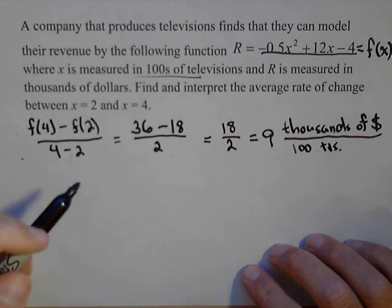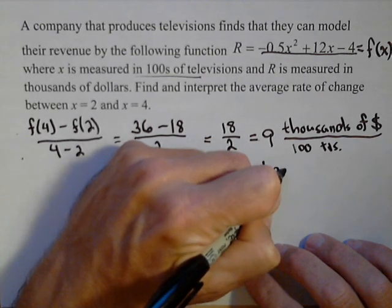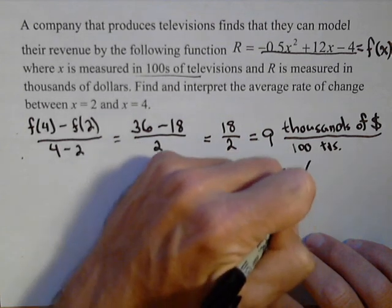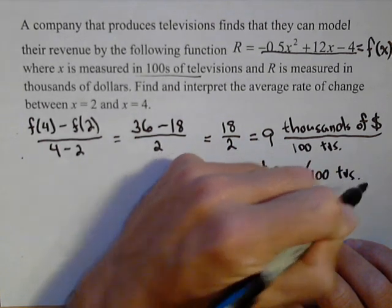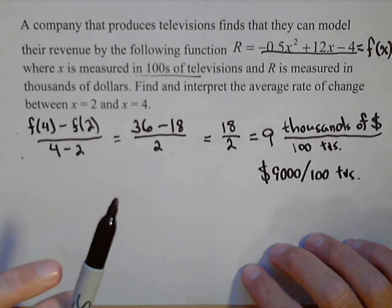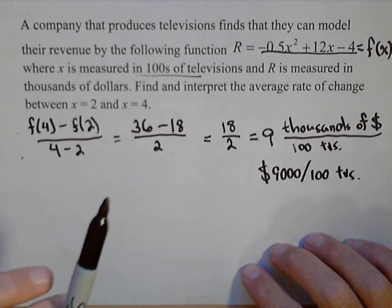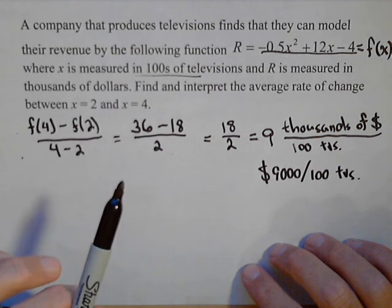So our average rate of change, what we found is that it's $9,000 per 100 TVs on average. We also found that it was positive. What that tells us is our revenue was increasing.